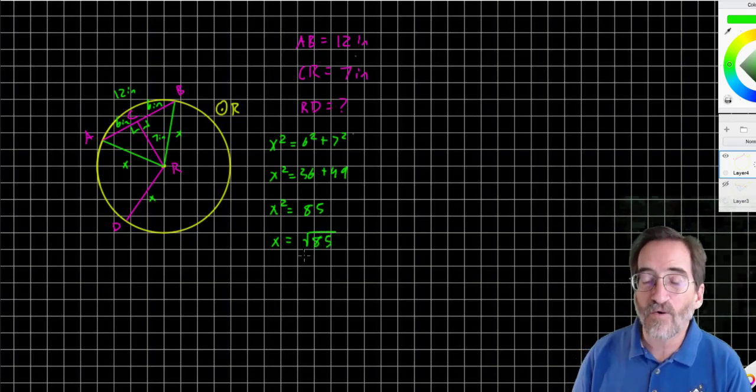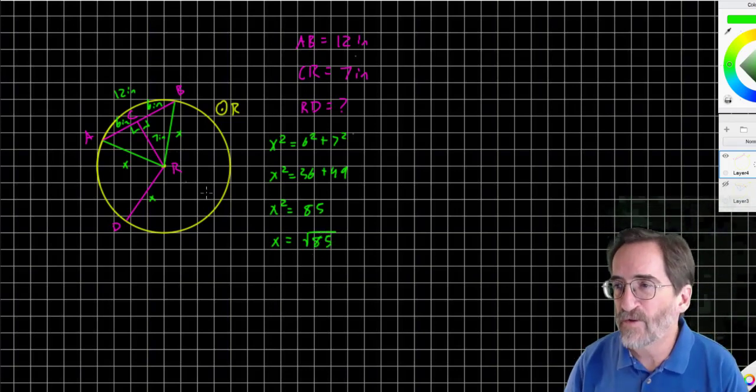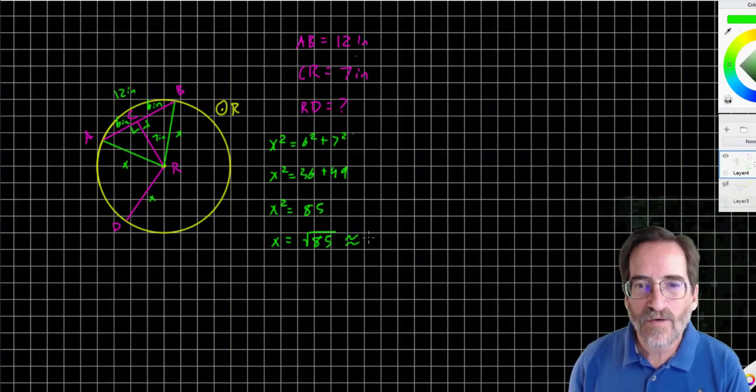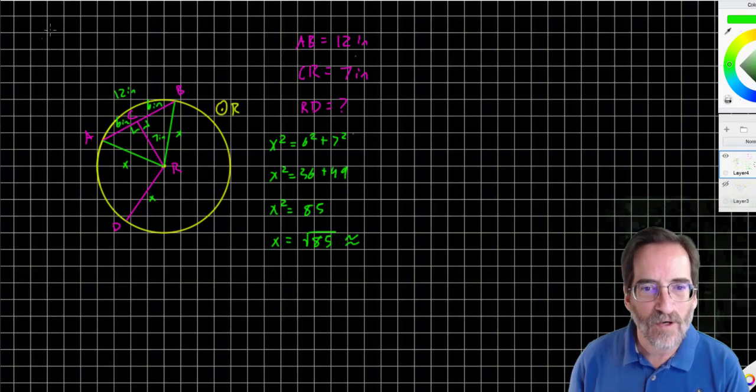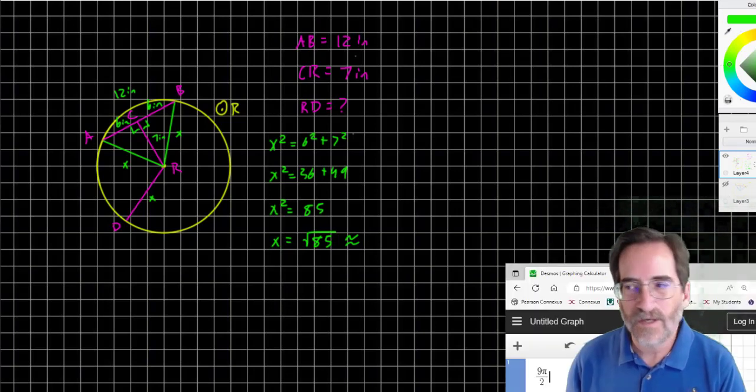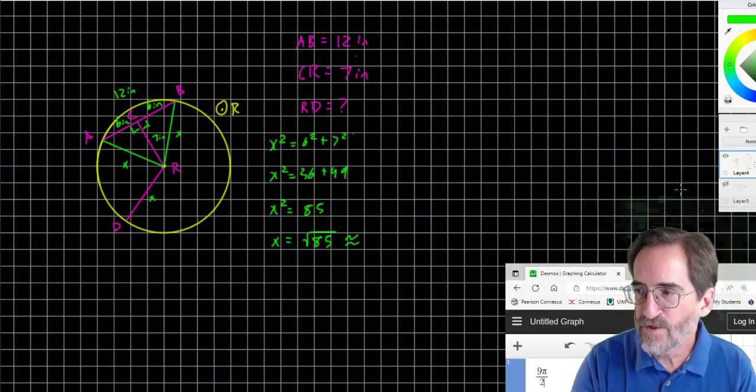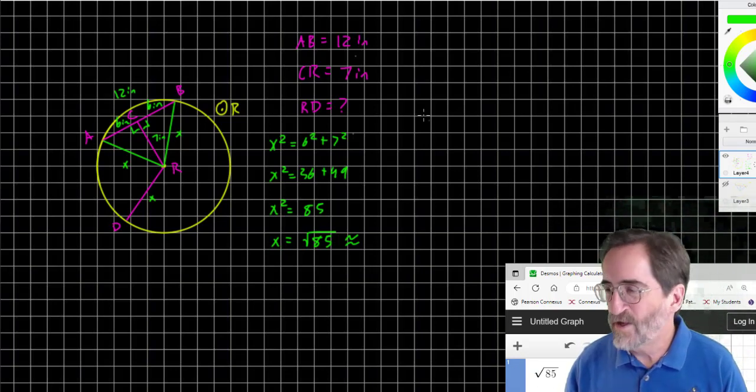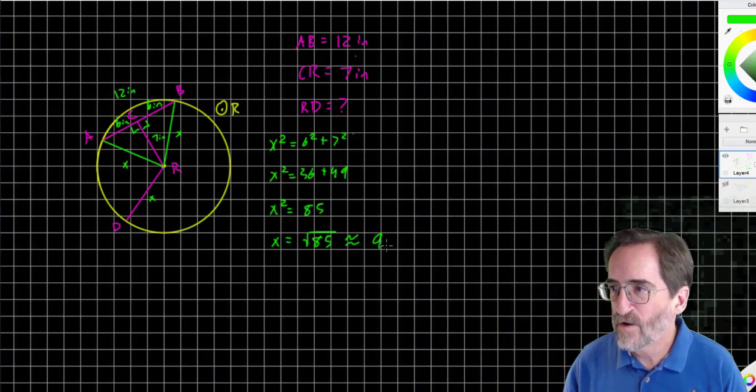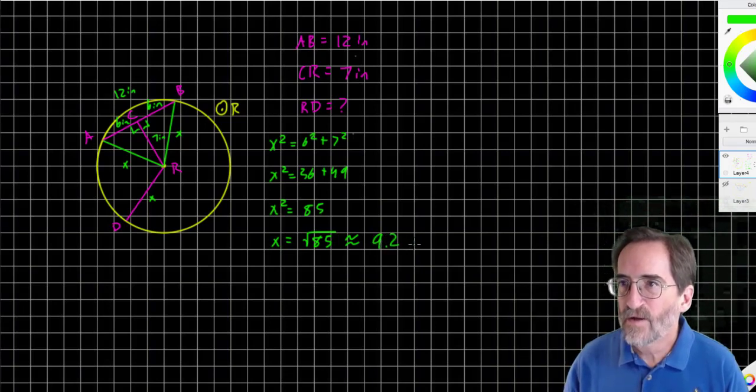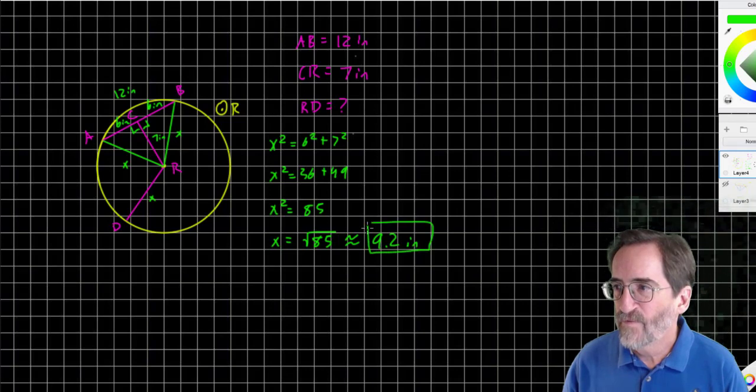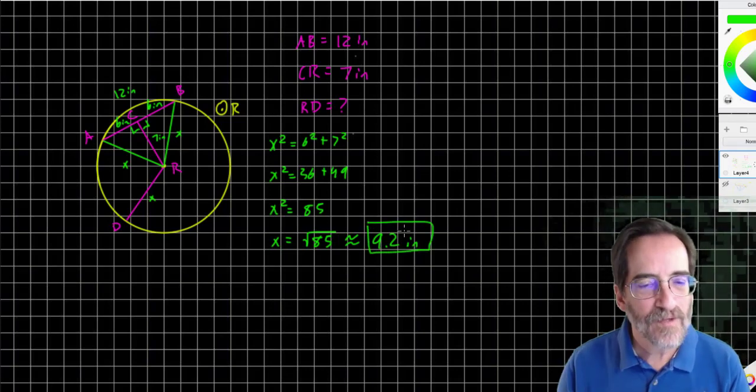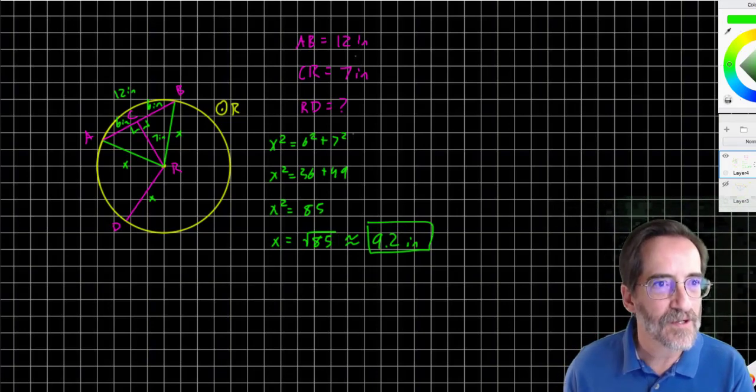X is the square root of 85. Technically negative or positive, but because we're dealing with positive lengths, the positive length is the one that makes sense. Square root of 85 is 9.2 inches. So that's the sort of problem you'll be doing. Hopefully that helps. I've gone a little long, I'm going to stop this video.